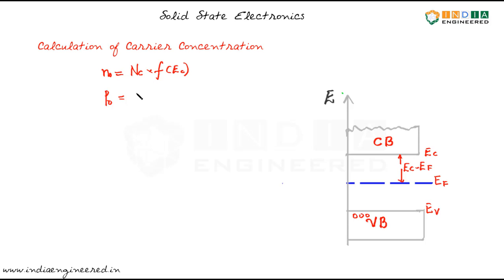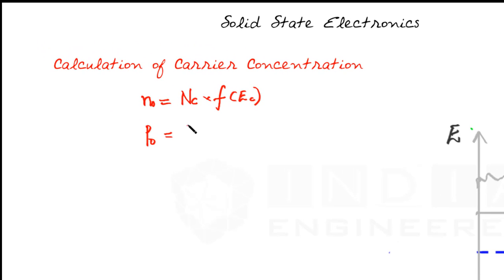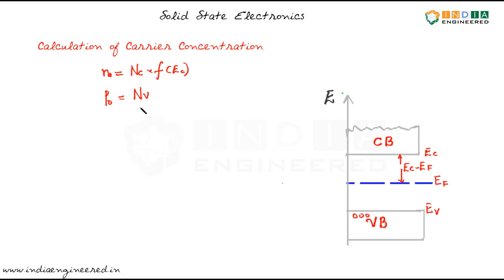By following the similar argument we can say that it is equal to Nv, that is the effective density of states at the valence band edge, that is this edge here, into probability of finding a hole at this valence band edge.